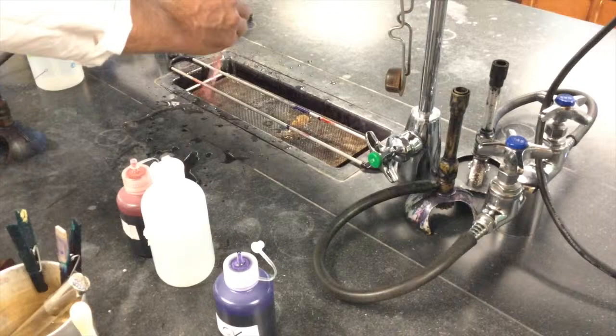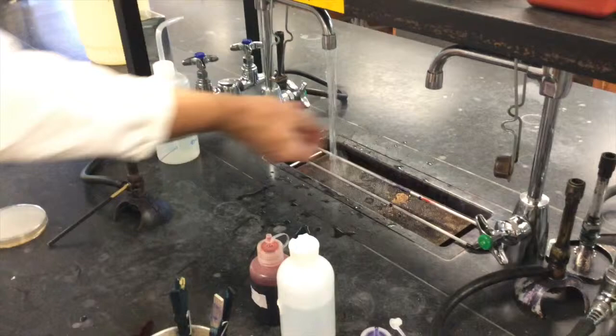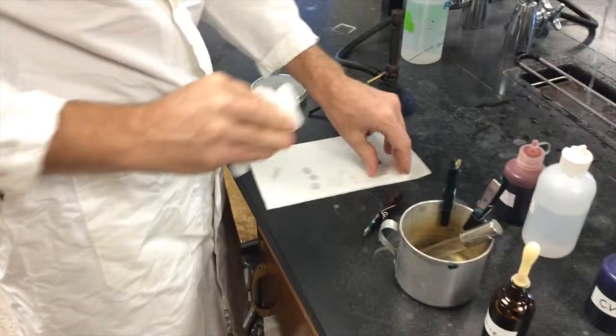Once that's done, you want to very gently wash this. And just briefly, don't wash it too much. You can wash the safranin out of the gram-negative cells. After it's been rinsed gently, you want to put it down on a towel. You can grab yourself Kim wipes if you'd like and pat the surface. No wiping. Wiping will pull your cells off, but you can pat the surface.